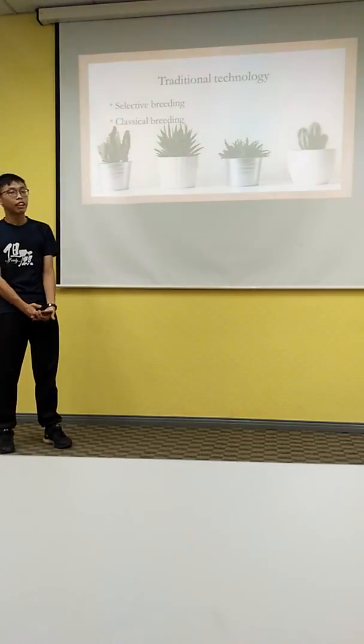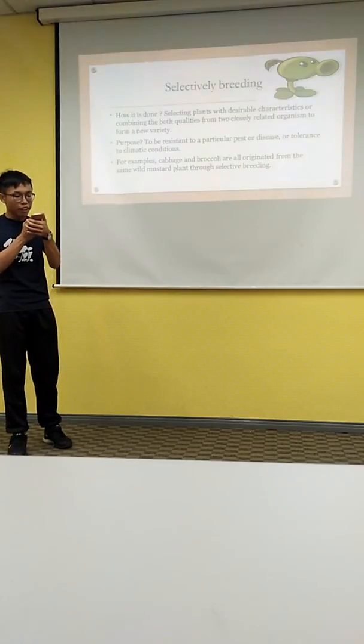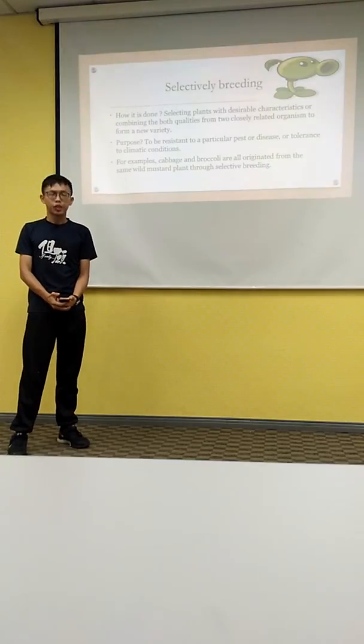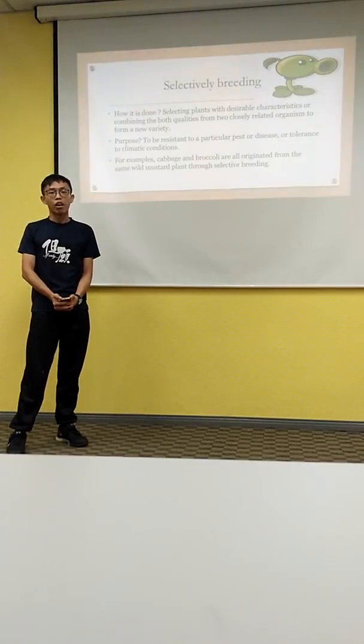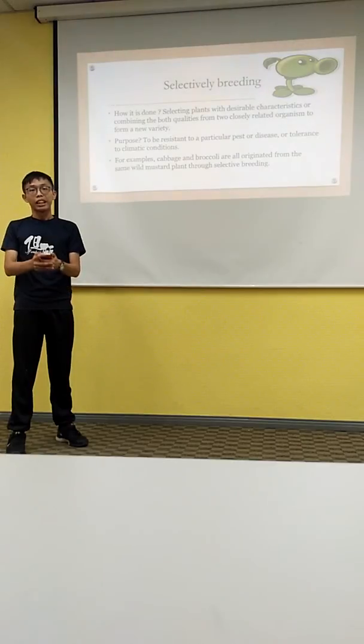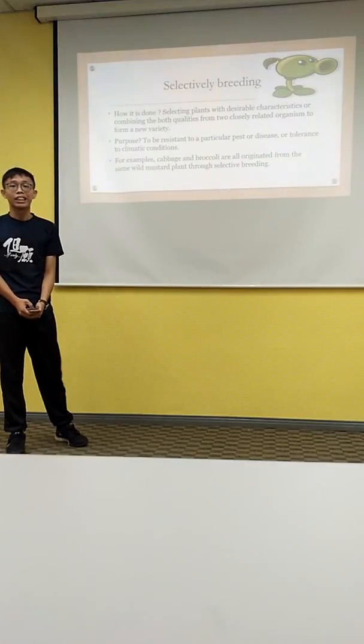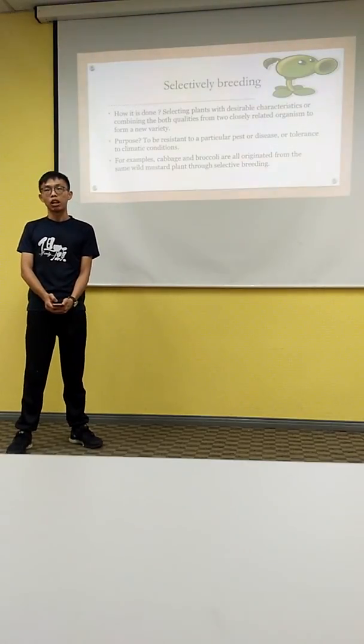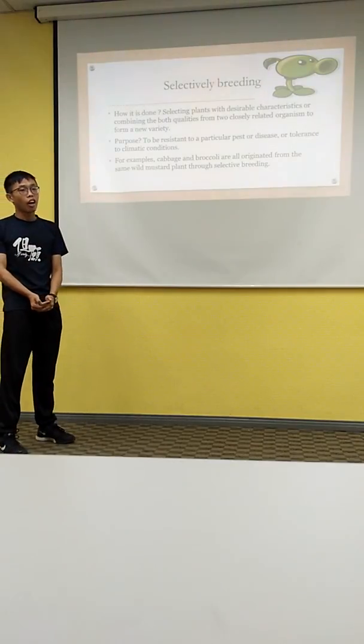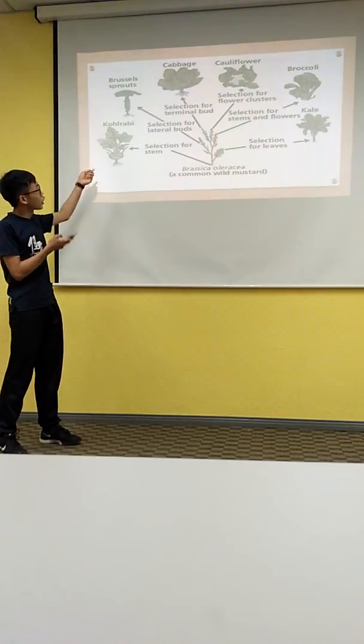The most common traditional biotechnology includes selective breeding and classical breeding with induced mutation. In selective breeding, new varieties are developed either by selecting plants with desirable traits or by combining qualities from two closely related plants. These creatures may be resistant to a particular pest or disease, as well as tolerant to extreme conditions. For example, cabbage and broccoli all originated from the same wild mustard plant through selective breeding.